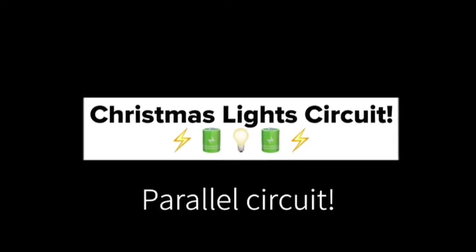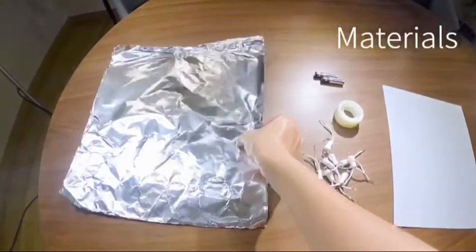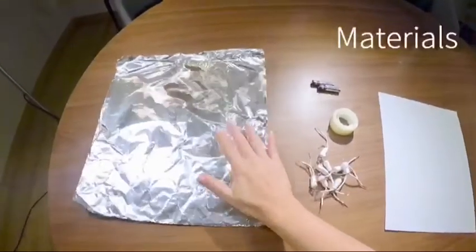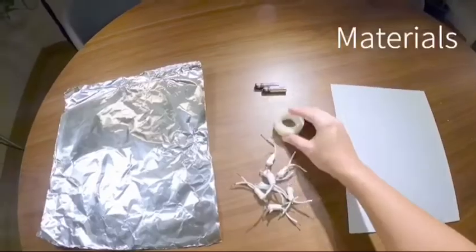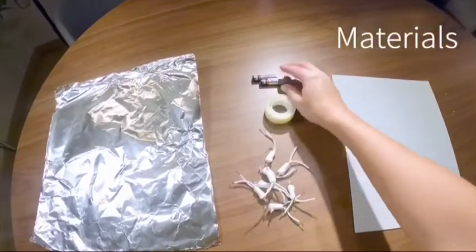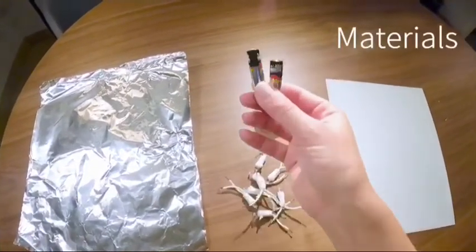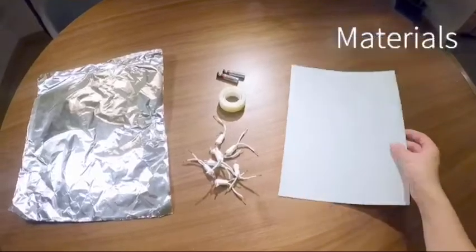Christmas light circuits. For this experiment we're going to need aluminum foil, Christmas lights, make sure that the wire is exposed, tape, two AAA batteries and a piece of craft paper.